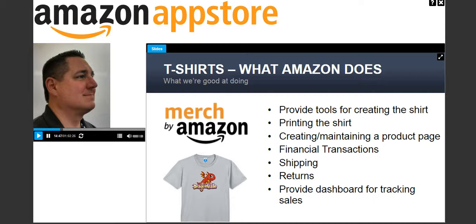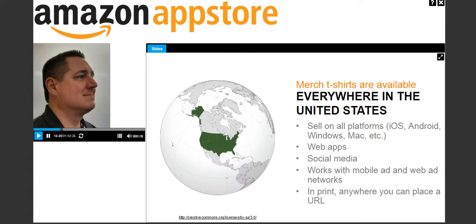Amazon will ship that shirt anywhere in the United States, and we'll also make it possible for you to advertise, merchandise, and promote your shirts anywhere — and I mean anywhere, really. It's not an Amazon exclusive thing. You can actually promote and sell your T-shirts on your iOS apps, Android apps, Windows, Mac, Samsung App Store, any app store at all. It can even be a web app. You can promote your T-shirts on social media.